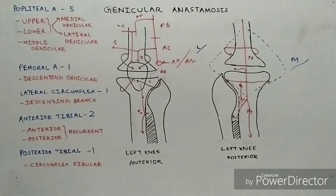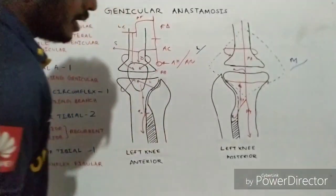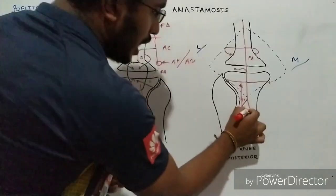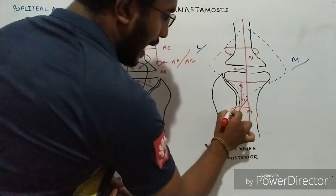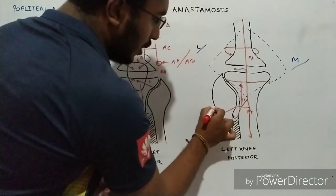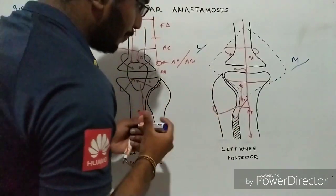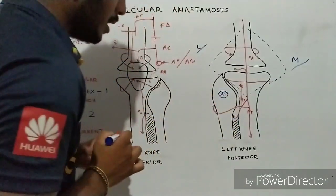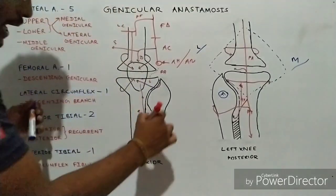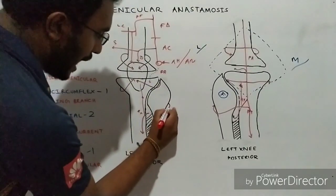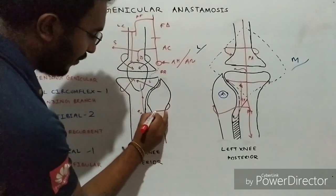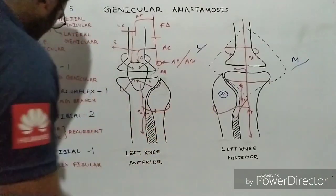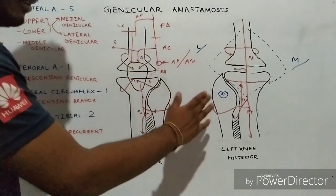The final branch to consider is the circumflex fibular branch from the posterior tibial artery. From the posterior tibial artery, a branch arises that goes around the fibula bone and enters from the lateral aspect of the fibula to join the anastomosis — hence it is called the circumflex fibular branch.